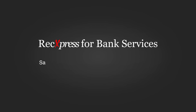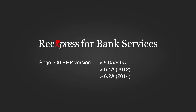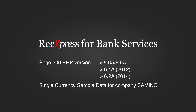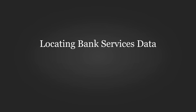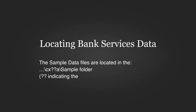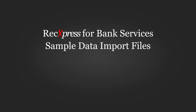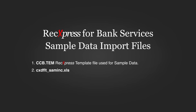Sage 300 ERP version 5.6a, 6.0a, 6.1a (also known as version 2012), or 6.2a (also known as version 2014). You also need single currency sample data for company Sam Inc. The sample data files are located in the CX followed by the version number sample folder. Activate RekExpress for Bank Services. The ccb.tem file is the RekExpress template file used for sample data. cx_dflt_saminc.xls is the RekExpress defaults file for identifying transactions.